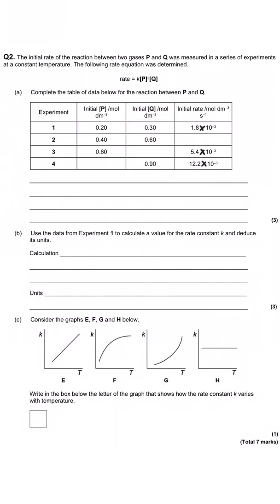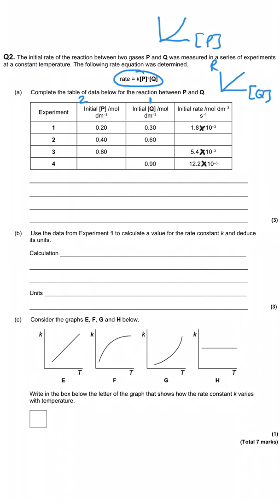This second question is a similar concept to the first, only this time we're doing things in reverse — working with the rate equation we've been given. We know P is second order and Q is first order. Whatever we do to Q, the rate will be directly proportional to that change. Whatever we do to P gets squared and that happens to the rate.